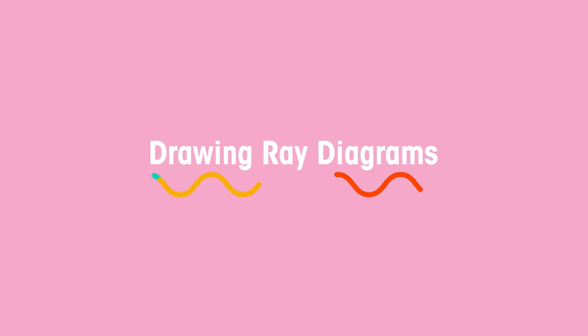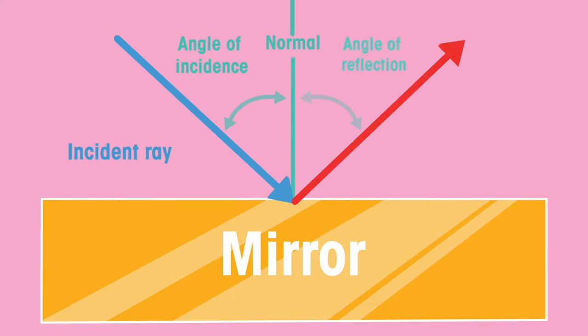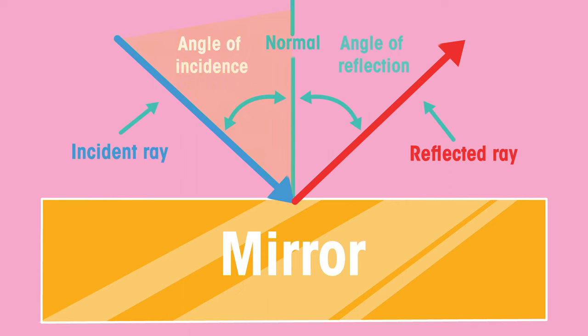When drawing ray diagrams the angle of incidence is always equal to the angle of reflection. The angle of incidence is the angle between the normal and the incoming incident ray.